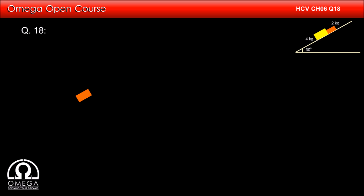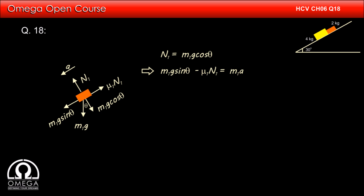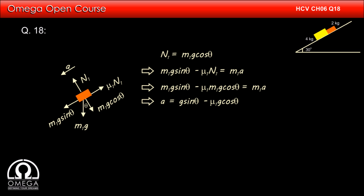In this case, there is no contact force acting between the two blocks. In the free body diagram of the 2 kg block, M1g sin theta acts down the incline, normal N1 = M1g cos theta, and friction mu1·M1g cos theta acts up the incline. Applying Newton's second law: M1g sin theta − mu1·M1g cos theta = M1·a, which gives a = g·sin theta − mu1·g·cos theta.